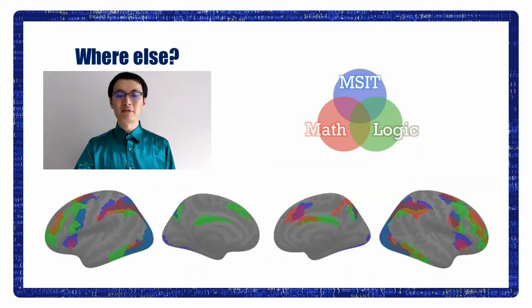Other than the intraparietal sulcus and the anterior prefrontal cortex, math, logic, and executive control also overlapped somewhere else, as shown in this overlapping brain map. Interestingly, math labeled in red, and executive control labeled in blue, overlap in the precentral gyrus and the anterior insula. The overlap is even greater in the right hemisphere.